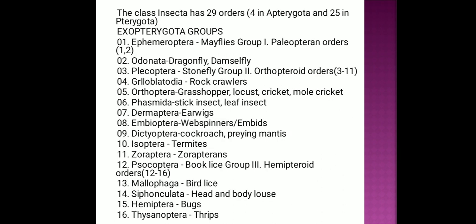Next we are going to learn Pterygota. Pterygota means adults are usually winged. Metamorphosis occurs; they do not molt once adult. Pterygota is divided into two subdivisions: Exopterygota and Endopterygota. Exopterygota means wings are externally well developed; metamorphosis is incomplete with no true pupal stages. Endopterygota means wings develop internally in pupal stages.